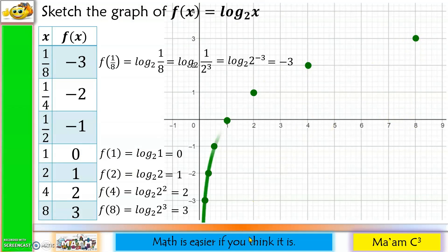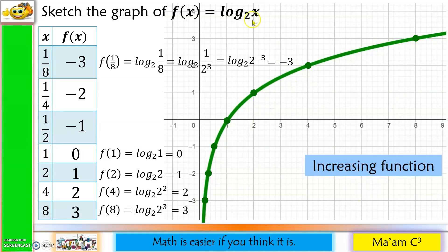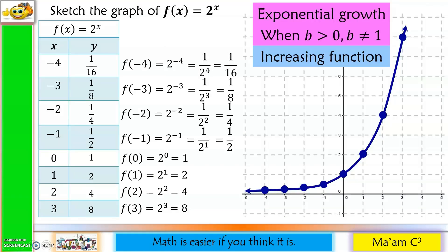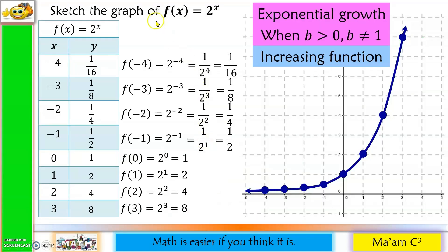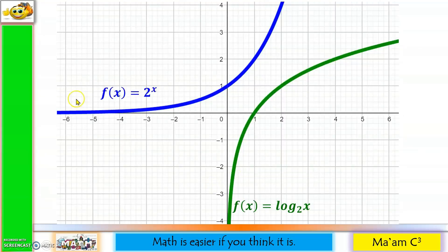Now let us connect the points. This is an increasing function, and this happens when your base is greater than 1. Now let us combine the graphs of f(x) = log base 2 of x and f(x) = 2 raised to x. This is the graph of 2 raised to x — an exponential function — while this one is f(x) = log base 2 of x, a logarithmic function. We have learned that exponential and logarithmic functions are inverses of one another.